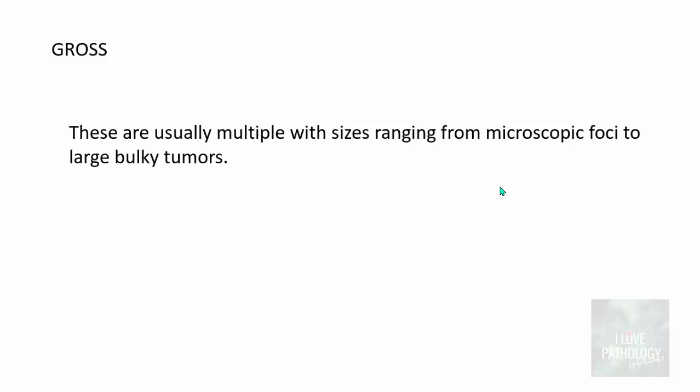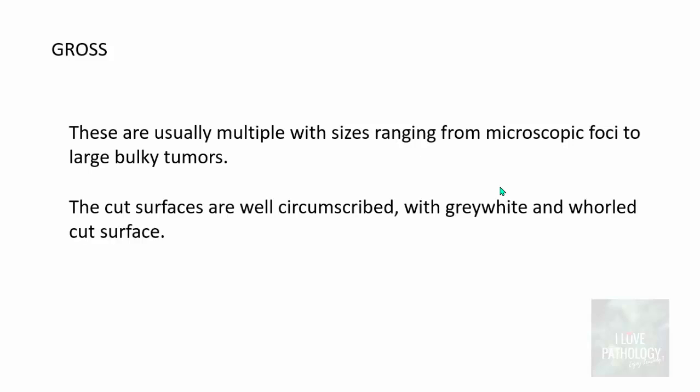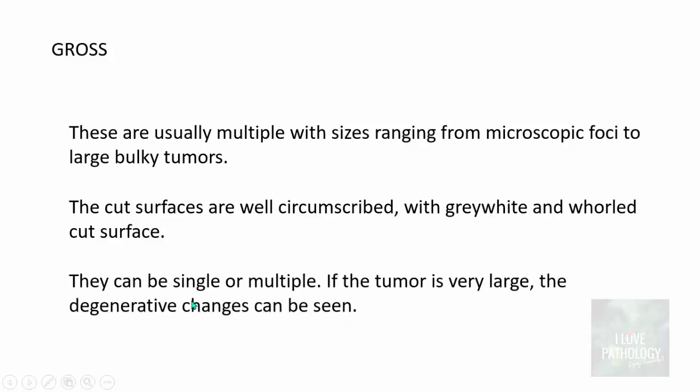Now we will move on to understanding the gross and microscopic features of leiomyoma. What are the gross features? These are usually multiple with sizes ranging from microscopic foci to large bulky tumors. The cut surfaces are very well circumscribed. They are gray white and whorled cut surfaces. Remember this whorled cut surface is a characteristic appearance of leiomyomas. They can be single or multiple and if the tumor is very large they show degenerative changes.